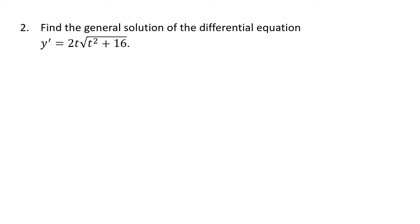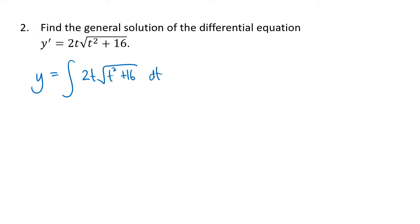Here we have another example. This time our independent variable is called t rather than x, but we're going to approach this the same way. Our function y is going to be the antiderivative of 2t times the square root of t squared plus 16, and we're going to take that antiderivative with respect to t.